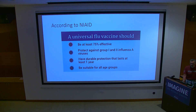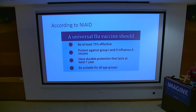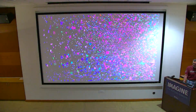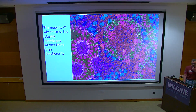Act two: universal flu vaccine. According to my institute, a universal flu vaccine should be 75% effective, protect against group one and two — that's H1 and H3 — have durable protection lasting at least a year, and be suitable for all age groups.